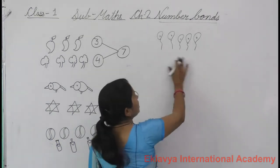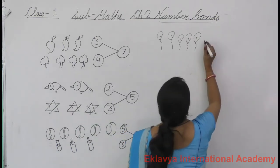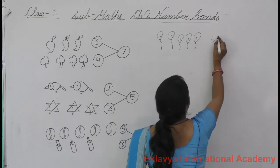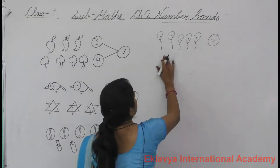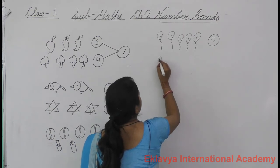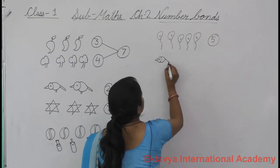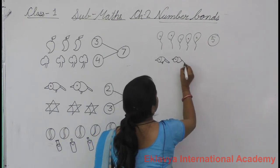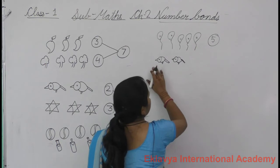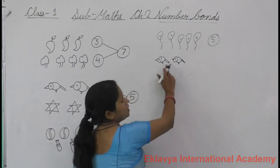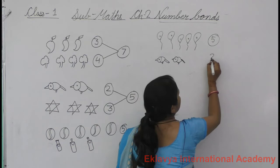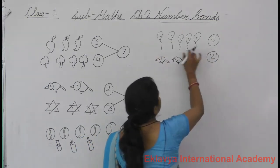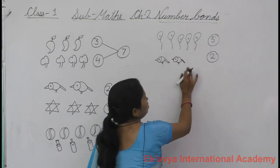How many balloons? Count. One, two, three, four, five. Five balloons. And how many birds? One, two. Two birds. And both are counted. Five balloons plus two birds.